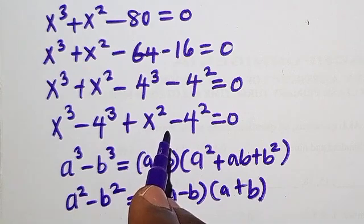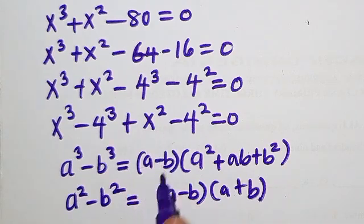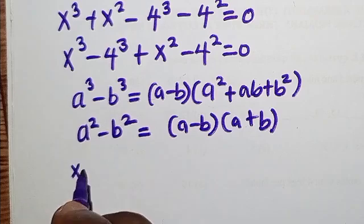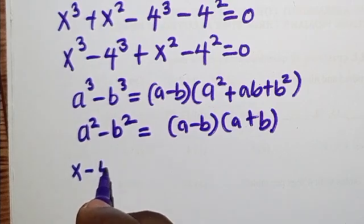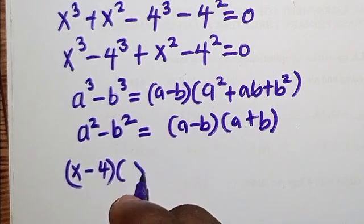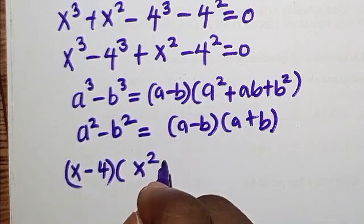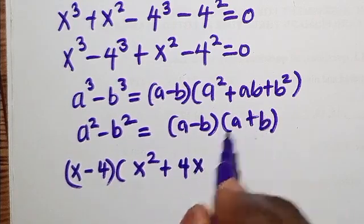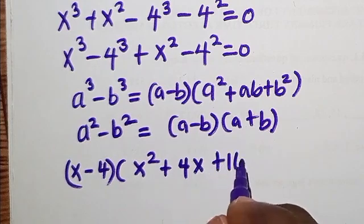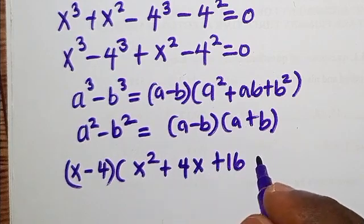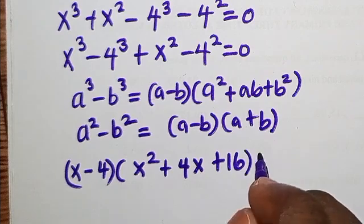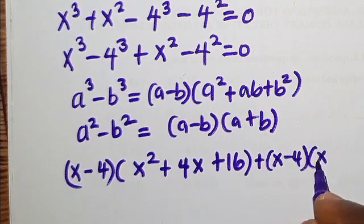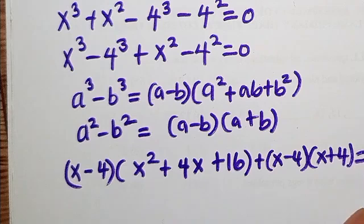Applying those identities: x³ - 4³ becomes (x - 4)(x² + 4x + 16), and x² - 4² becomes (x - 4)(x + 4). So the full expression is (x - 4)(x² + 4x + 16) + (x - 4)(x + 4) = 0.